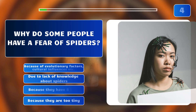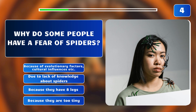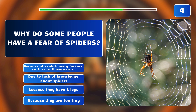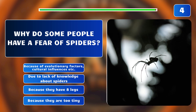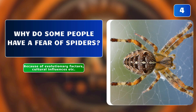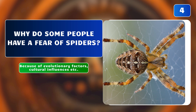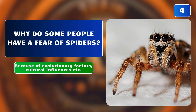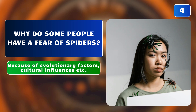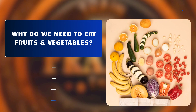Why do some people have a fear of spiders? Because of evolutionary factors and cultural influences? Due to lack of knowledge about spiders? Because they have eight legs? Or because they are too tiny? The correct answer is: because of evolutionary factors, cultural influences, etc. Arachnophobia may stem from evolutionary factors, cultural influences, or past negative experiences.